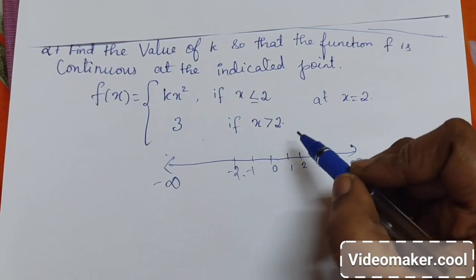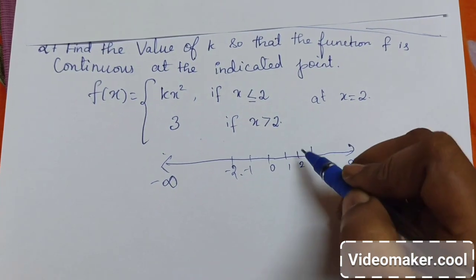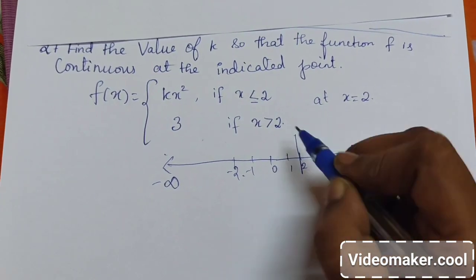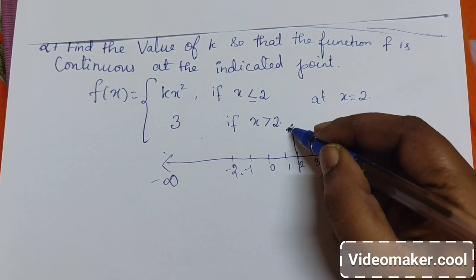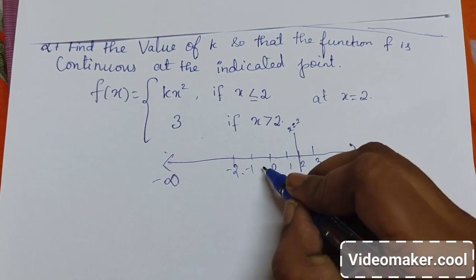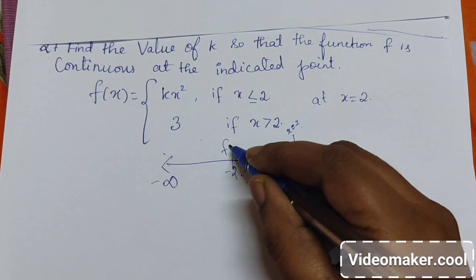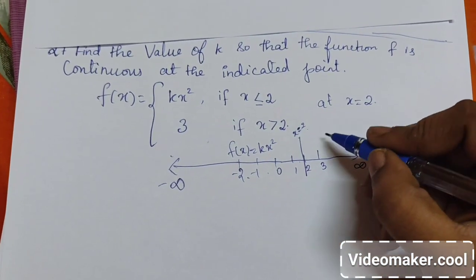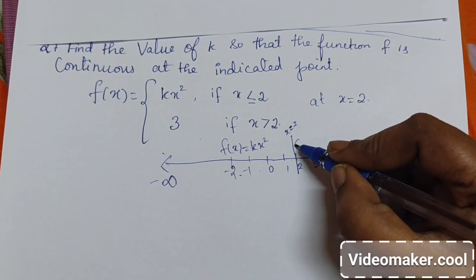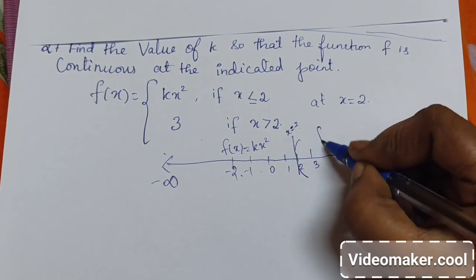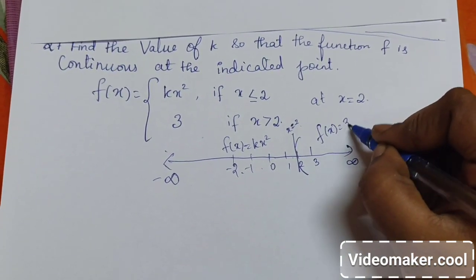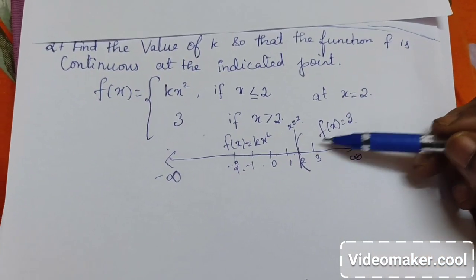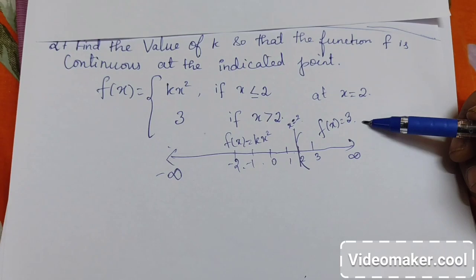Whenever the values of x are less than or equal to 2, the function will be kx squared. And when the values of x are greater than 2, we will take the function as 3. After 2, the function will be a constant function.